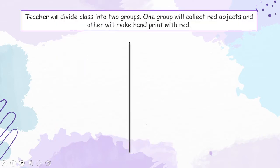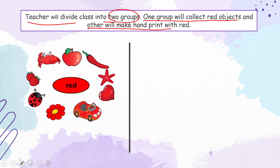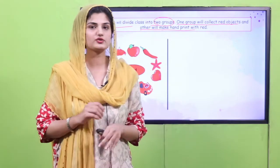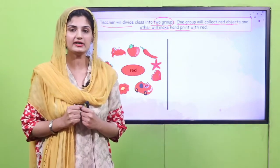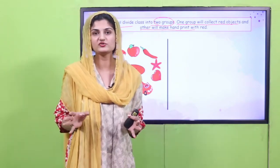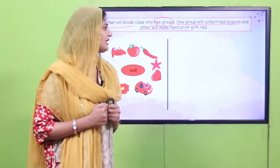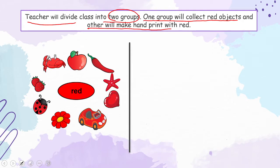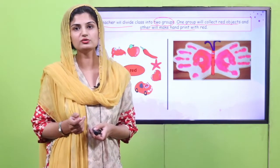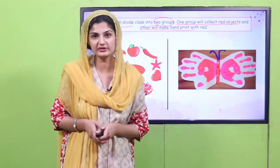You can repeat the activity as many times as you like. If you don't have a good command, you can repeat it twice or thrice. Now, the teacher will divide the class into two groups. One group will collect red objects and the other will make a hand print with red color. I want you to spread into your class and find the red things — as many as you can find — and bring them back to your teacher. The other group is going to make a hand print butterfly with red color.